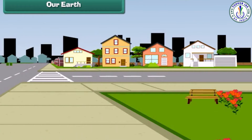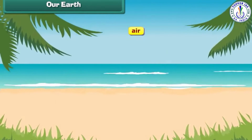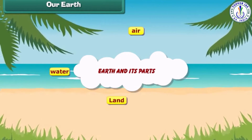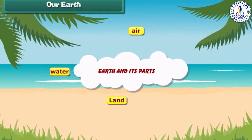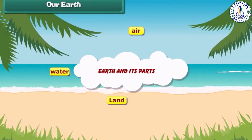Our Earth gives us air and water to live. It also gives us land to make roads, houses and buildings to live in and work, and parks to play around. The air, water and land are three major parts of our Earth.